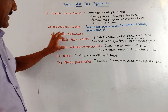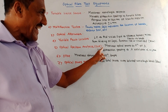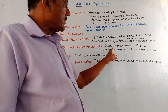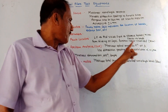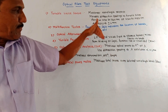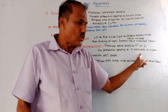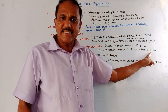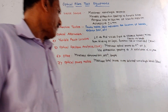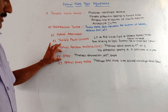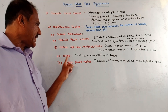Next is optical spectrum analyzer, that is OSA. It measures the optical power as a function of wavelength. It makes use of diffraction gratings and the wavelength resolution is less than 0.1 nanometers.